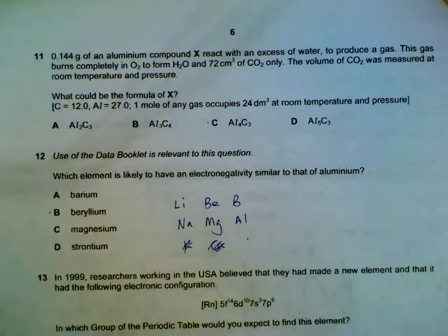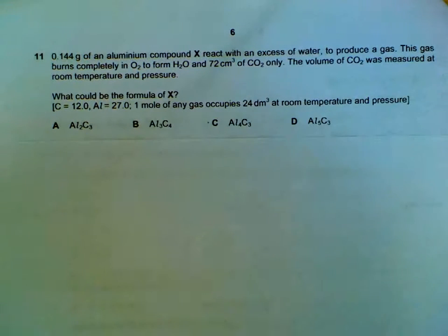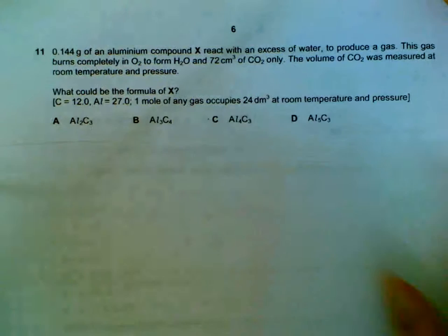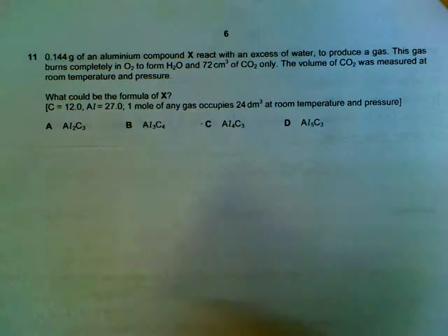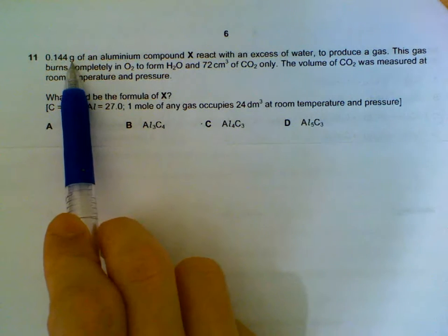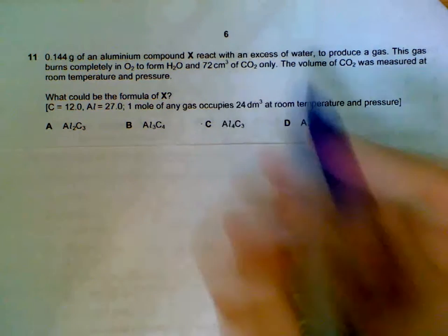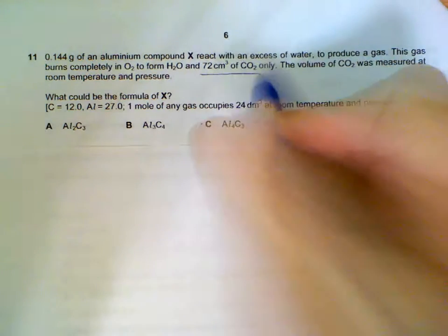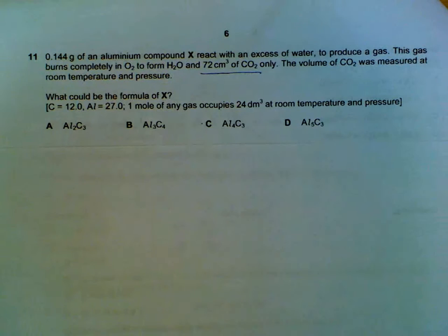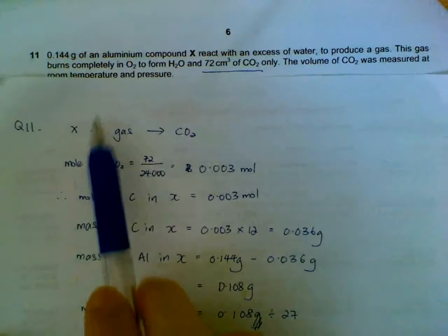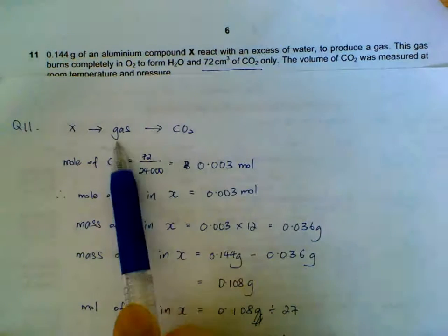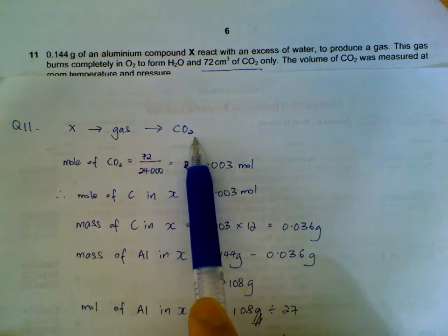Number 11. Students who do the past year practices seem to have problems with this question. What we have is a compound that when burnt will produce eventually 72 cubic centimeters of carbon dioxide. So we start off with this information, because this information gives us a number of moles. So what you have to realize is, X will become a gas, and then the gas gives off carbon dioxide upon further reaction.